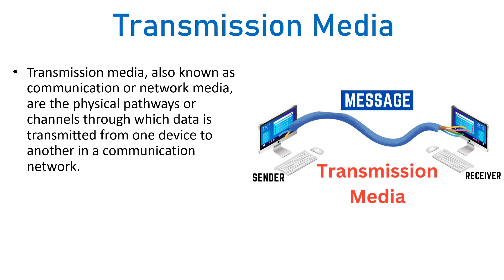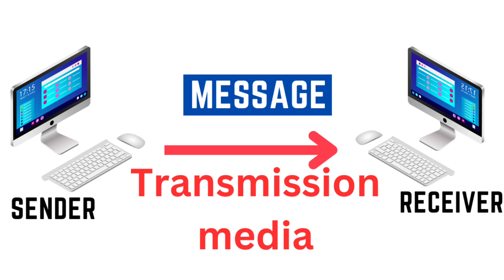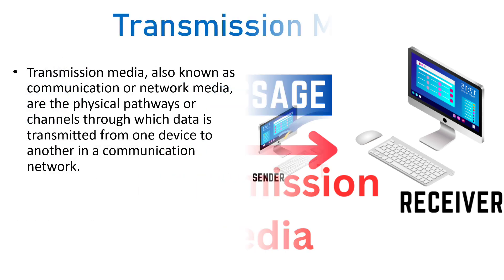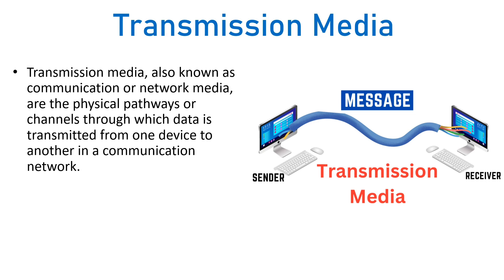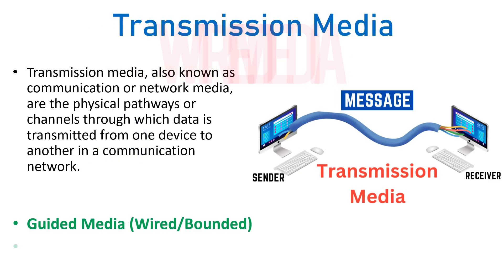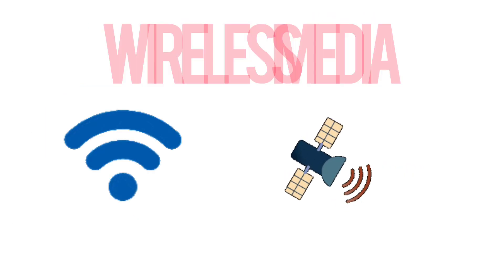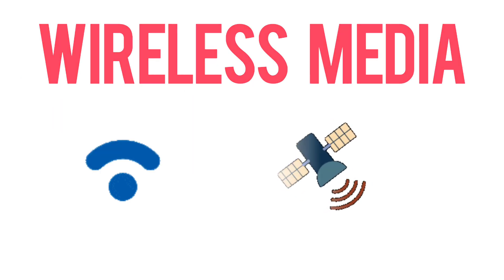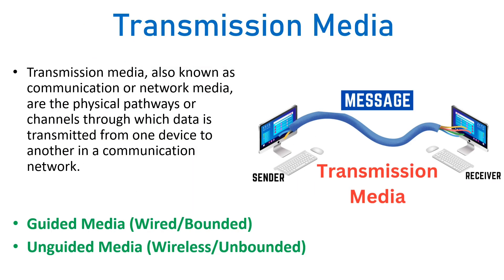In a computer network, data is transmitted from one computer to another through a physical or wireless path. That pathway through which data is transmitted from one computer to another is called the transmission media. Transmission media is of two types: guided media, which is wired or bounded media, and unguided media, which is wireless or unbounded media.